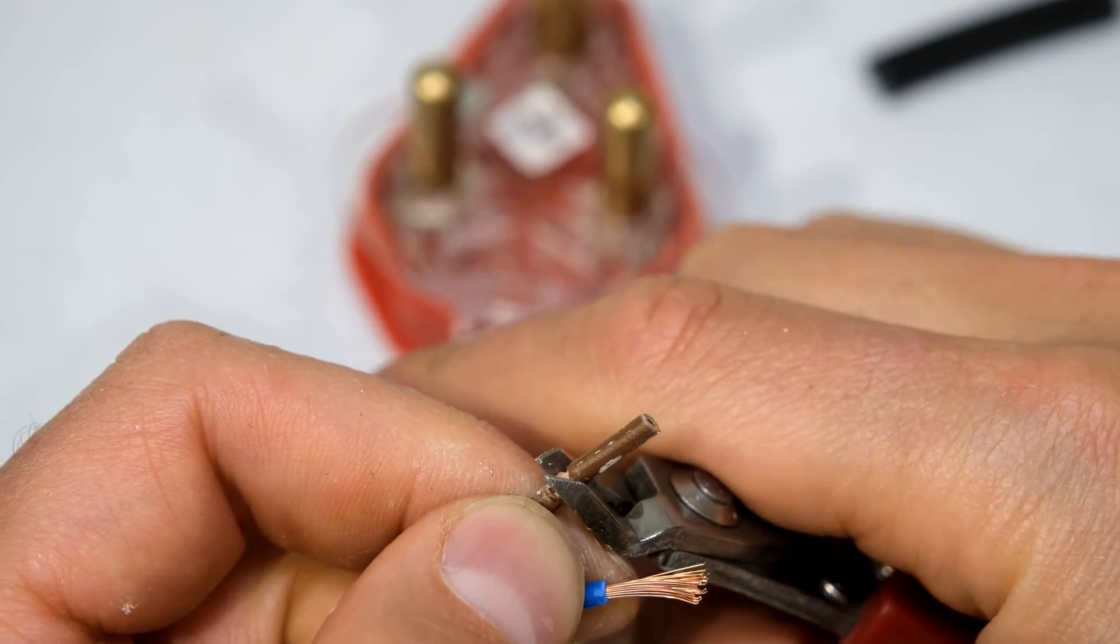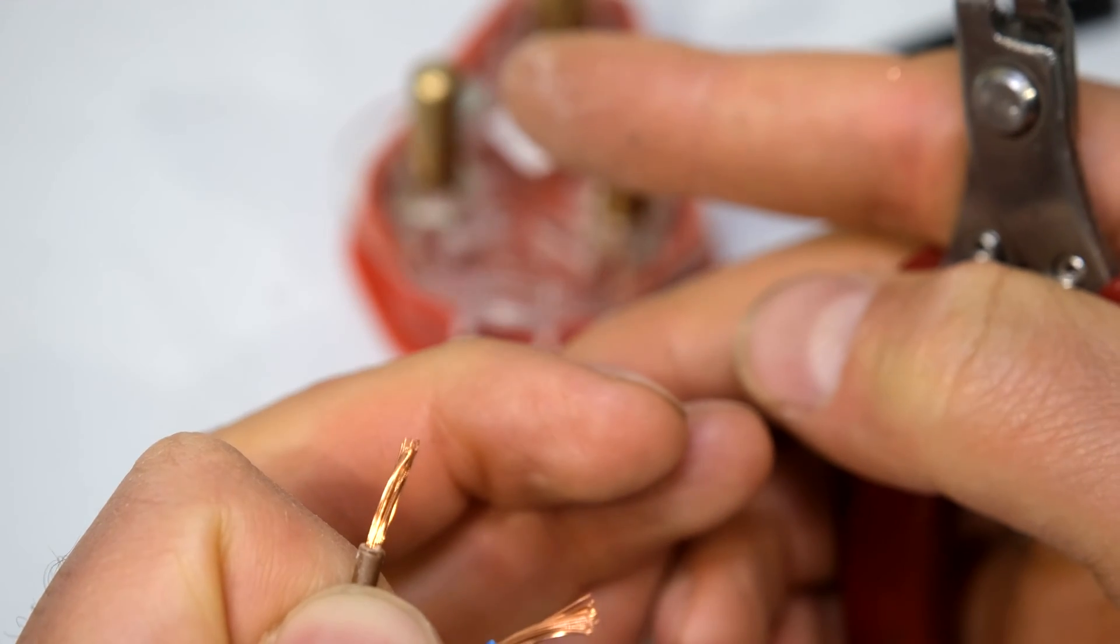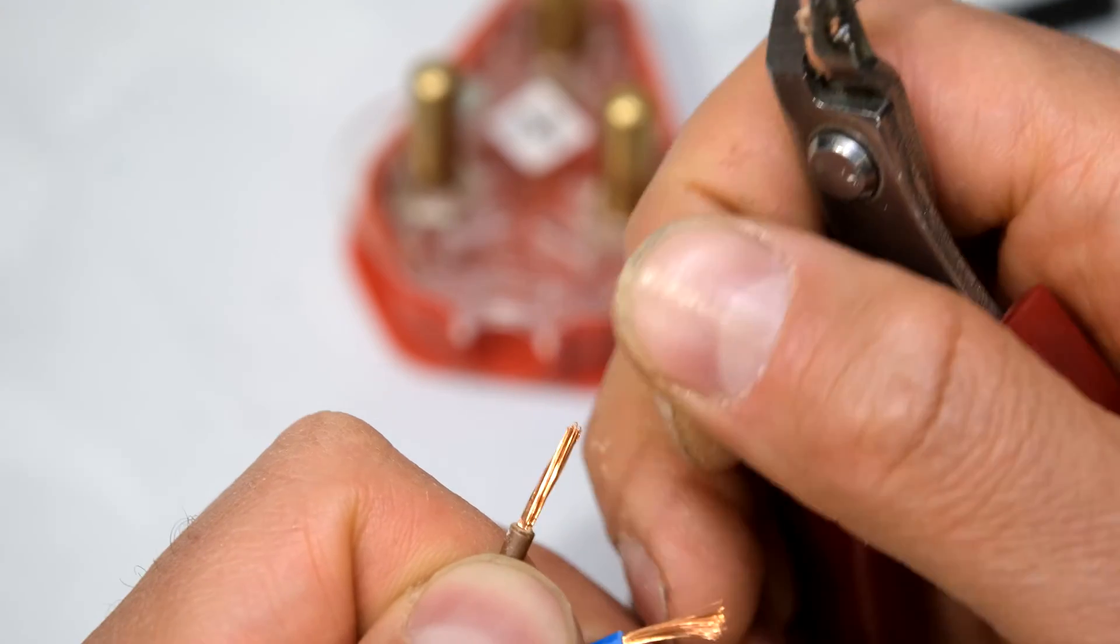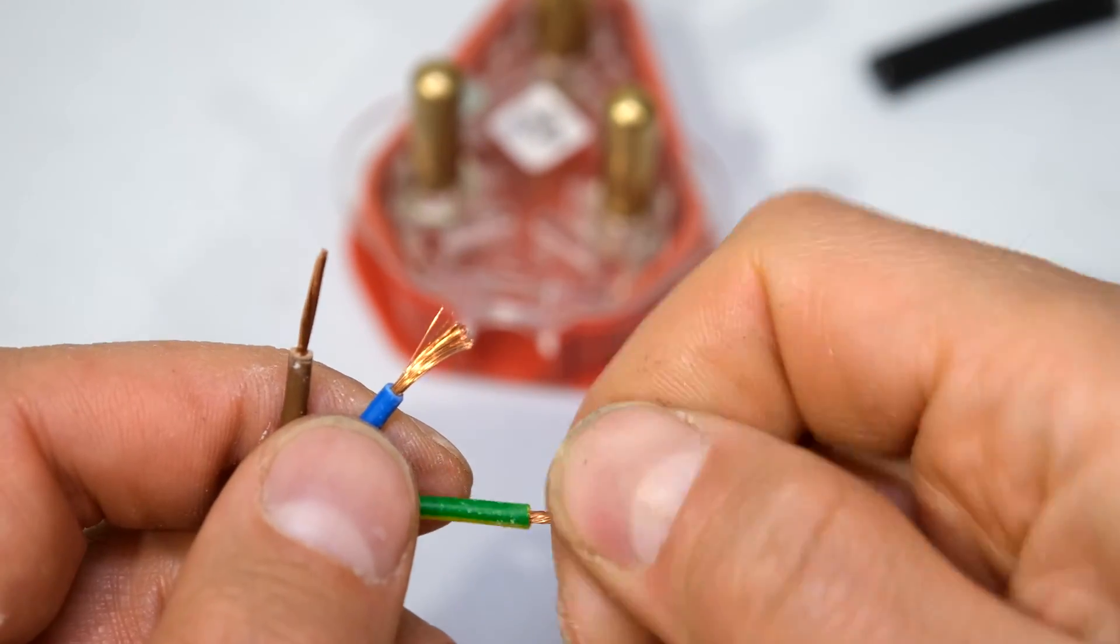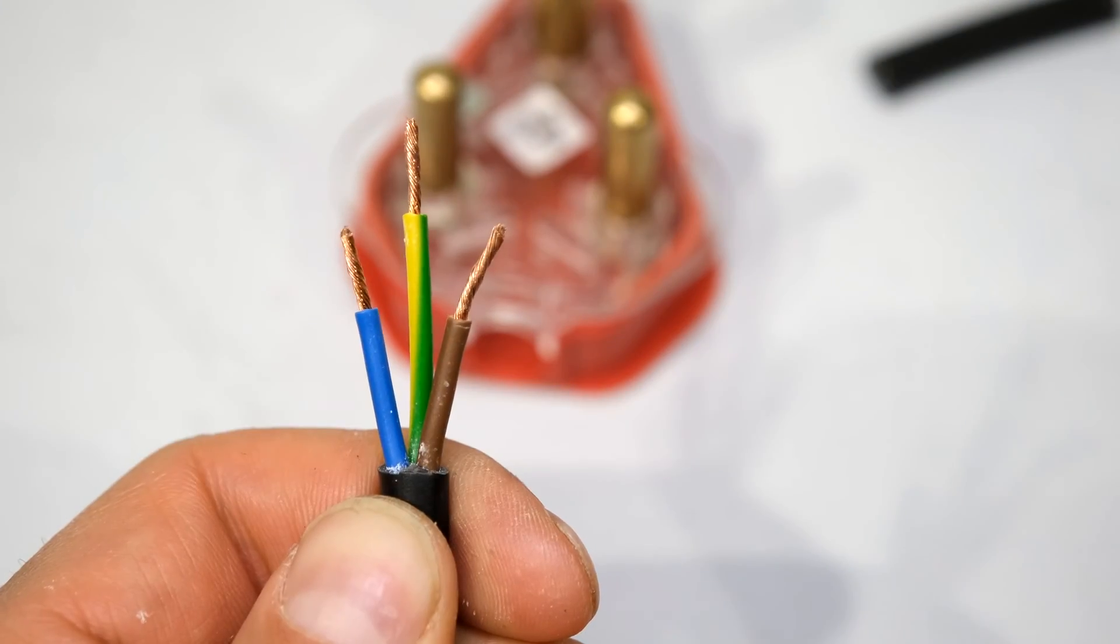Now I remove the insulation of the neutral and the live wire. Please note, I do not cut through the insulation. What I do is it's more of a pulling function and a tearing. As you can see, I tear the insulation away and this way I haven't damaged any of the copper strands. Make sure you twist the copper strands. Your wire should now look like that.